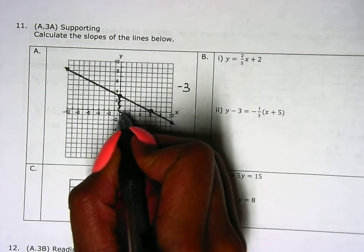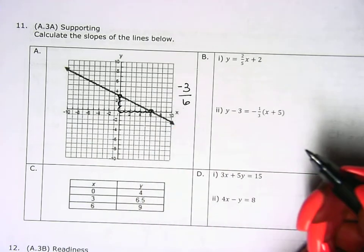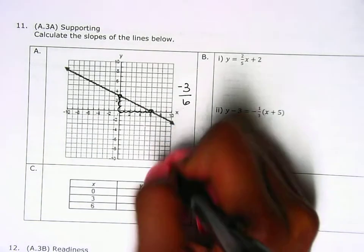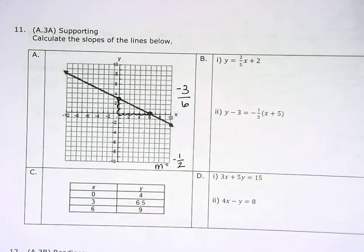and then we went over one, two, three, four, five, six, so over six. And to simplify that, we know that three over six is one-half. So our slope for that one is negative one-half.